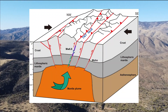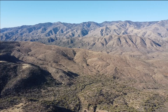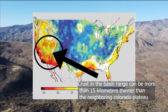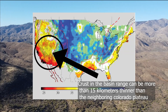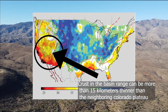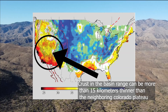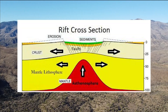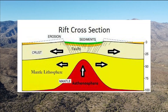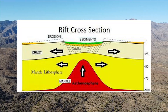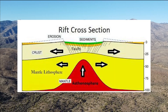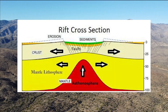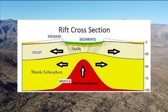The crust in the basin and range is not all that thick, and because of this researchers believe that it's putting less pressure and weight onto the mantle, which is allowing the mantle to rebound and actually press up on the crust causing it to extend in that region.